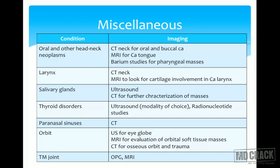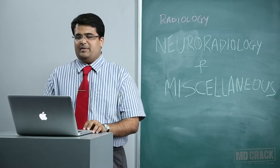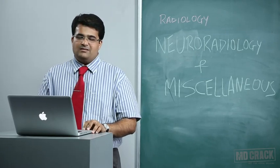For salivary glands, ultrasound is the primary modality; CT is used for further characterization. For thyroid disorders, ultrasound is the modality of choice, with radionuclide studies helping evaluate ectopic thyroid tissue or residual tissue post-operatively. For paranasal sinuses, CT is the modality of choice. For the orbit, ultrasound evaluates the eye globe; MRI is used for orbital soft tissue masses and the retro-orbital optic nerve. For the temporomandibular joint, an OPG or MRI may be performed.